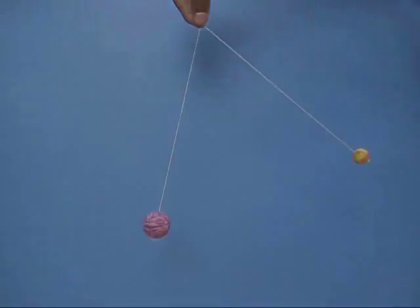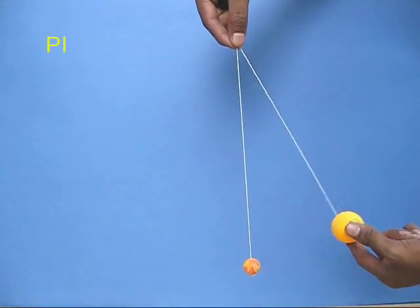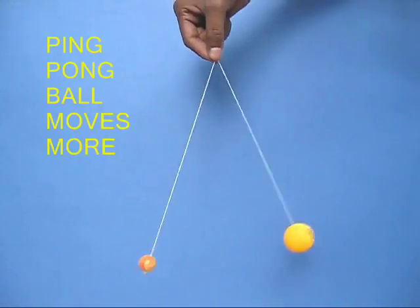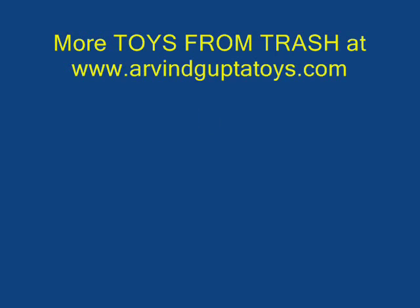Now in the last experiment, you take a heavy ball which is hanging down and take a very light table tennis ping pong ball. Ping pong ball being very light, it travels much more, the amplitude is much more. You can see that there is a conservation of momentum in this experiment.